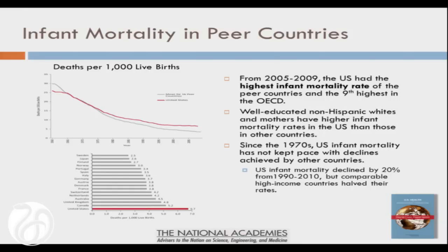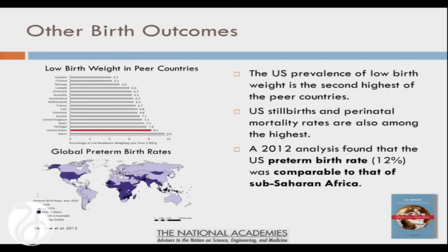This disadvantage starts at the beginning of life. It's pretty well known that infant mortality rates in the United States are higher than in other countries, but I don't think people realize how much higher. What's particularly disturbing is how long this problem has been going on. The gray line is infant mortality rates in peer OECD countries; the red line is the US. They outpaced us long ago and we continue to have higher infant mortality rates. Other birth outcomes tell the same story — the second highest rate of low birth weight, preterm births — our rate is comparable to sub-Saharan Africa on a variety of measures.